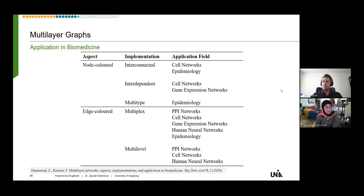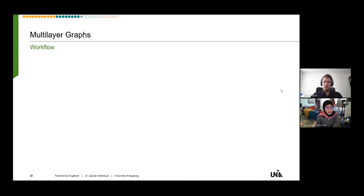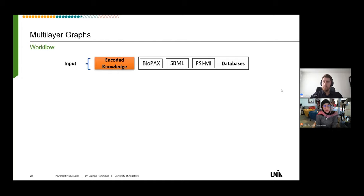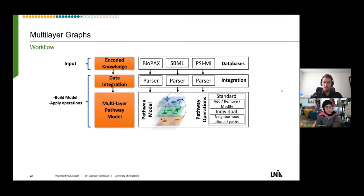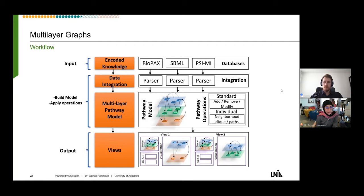The workflow was as follows: we start with the input by referring to databases for encoded knowledge, then use parsers to integrate this data, implement software to create the pathway model and perform operations, and at the end generate the output — different views created by the package after applying operations.